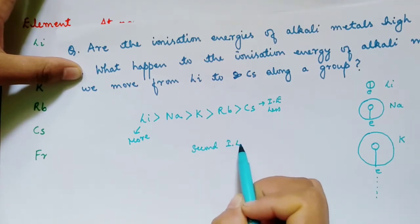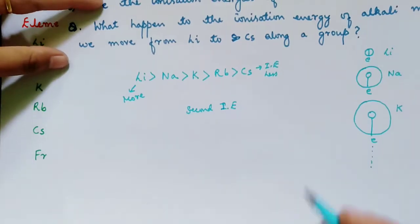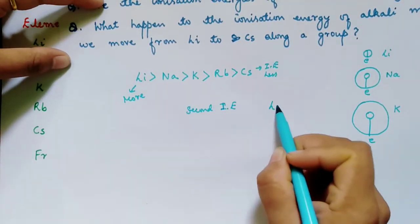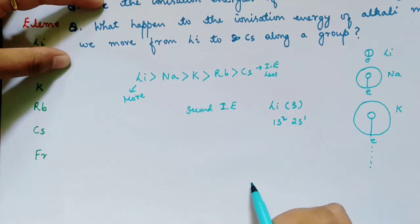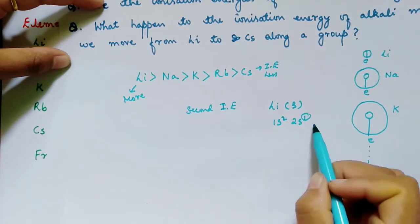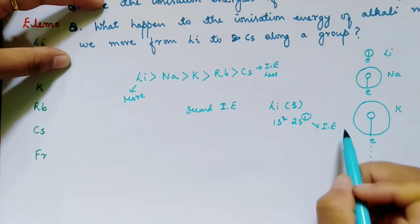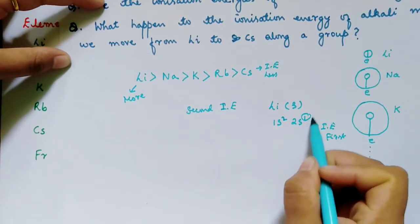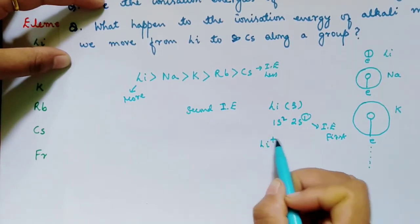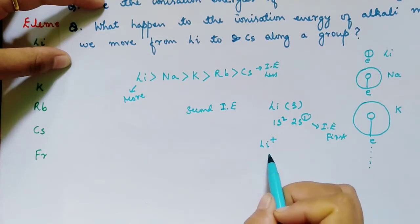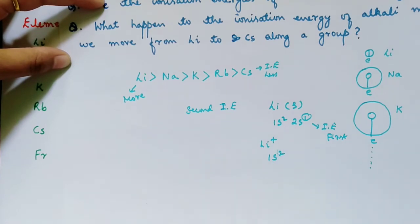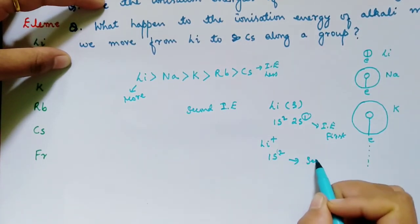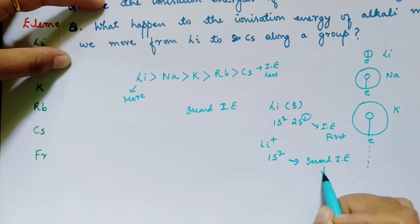Now we come to the second ionization energy. What is this second ionization energy? Suppose I consider lithium with atomic number 3 — its electronic configuration is 1s² 2s¹. If I want to remove this one electron, I have to apply ionization energy. This is the first ionization energy applied to remove that electron. After removing it, lithium changes into lithium plus, meaning the electronic configuration is now only 1s². If I want to remove again one electron from this 1s orbital, will it be easy? No. That energy required is the second ionization energy, and this second ionization energy will be very high.